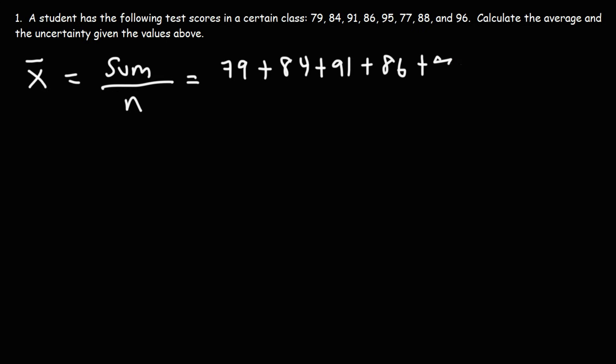So 80 plus 86 and so forth. And we have eight numbers in this list. So the sum is 696.